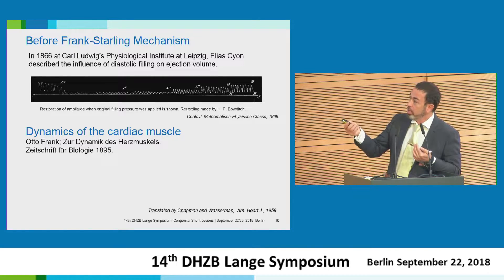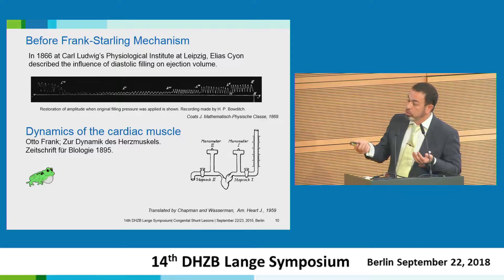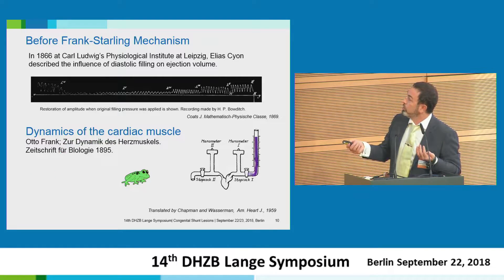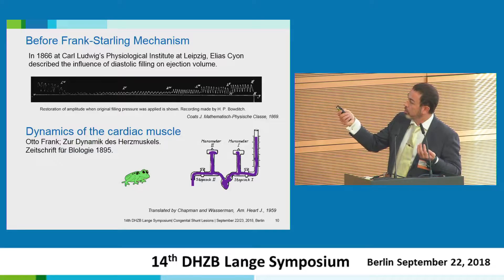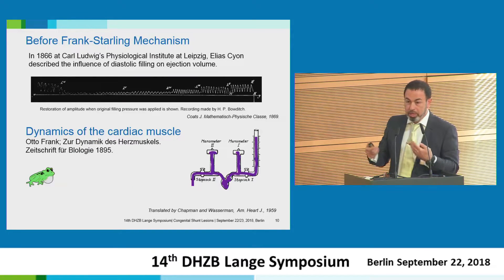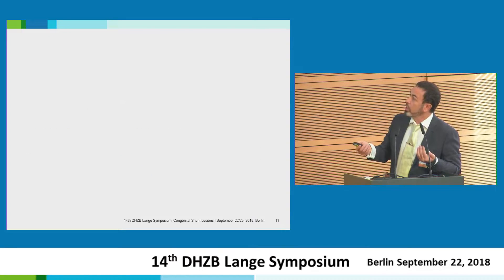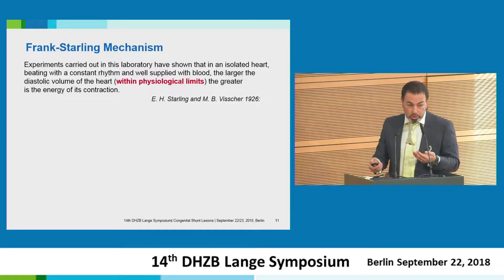And after that, Frank — in his publication of 1895, 30 years later — described the dynamics of the heart and cardiac muscle. He also used the frog heart. Therefore I am optimistic for our cyanotic hearts, because the first experiments were done with the frog heart. He placed it in a machine with volume load and pressure measurement before and after the heart, and he wrote: from my experiments it can be seen that tension rises as filling increases. A couple of years later, Starling described this in more detail in dogs, and said that within physiological limits we need a filling — within physiological limits.